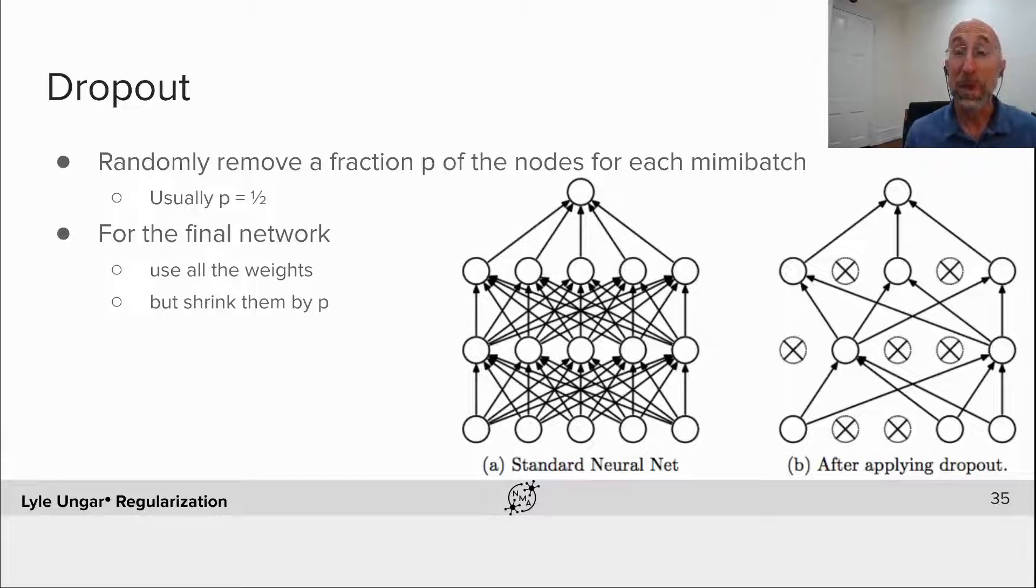Then put back in all the weights that you had removed, randomly pick another half of the nodes to drop out—sampling with replacement—do another mini-batch gradient descent, and repeat.